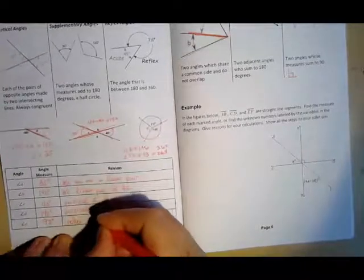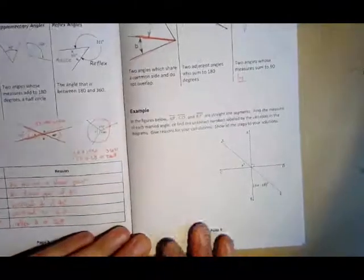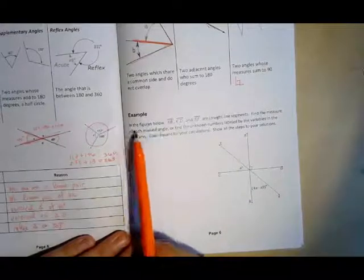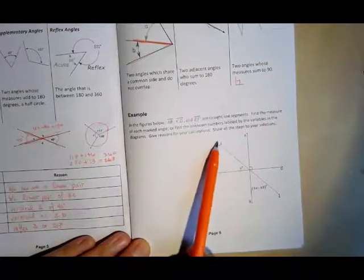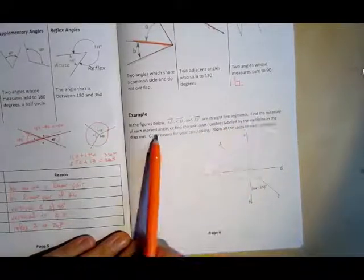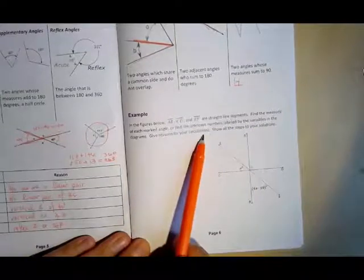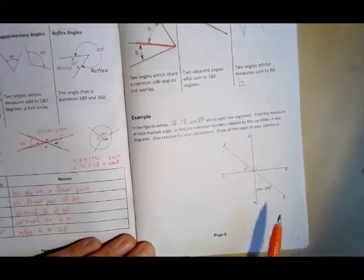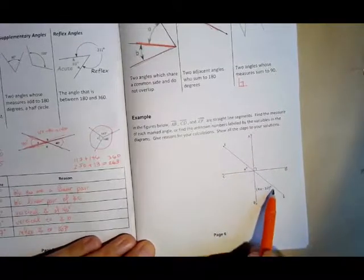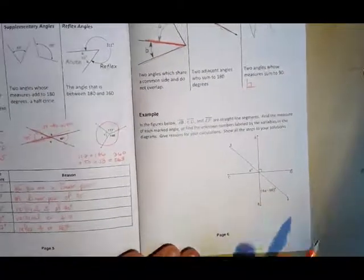We're going to take a look at one more example together that combines a lot of these ideas. In the figures below, A, B, C, D, and E, F are straight line segments. Find the measure of each marked angle or find the unknown labels labeled by the variables in each diagram. Give reasons for your calculations and show all the steps to your solutions. So right here in this diagram, we have unknown angle x. And then we have another thing that's represented here as 4x minus 10. So I know the following things. I know, for example, this right angle is 90 degrees.